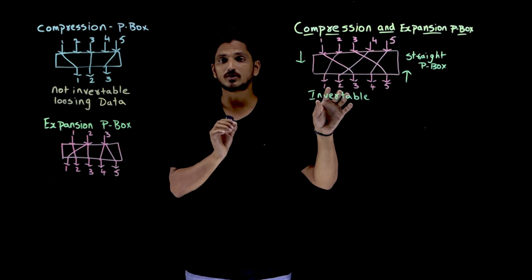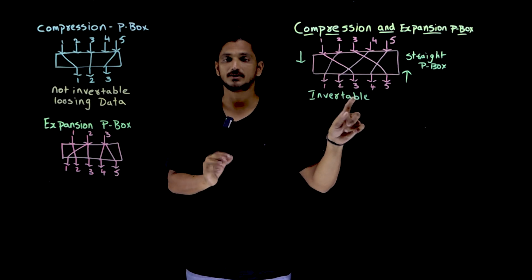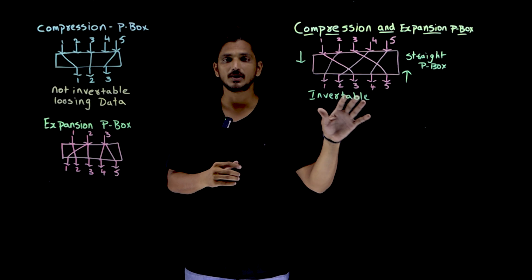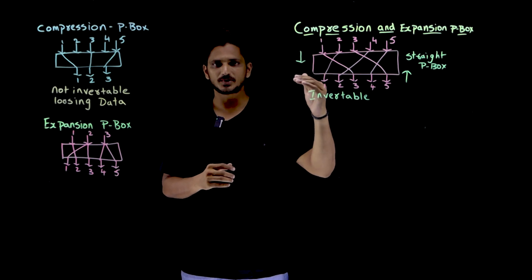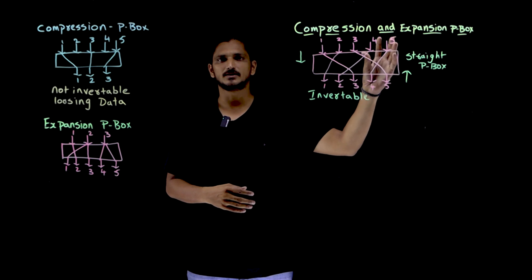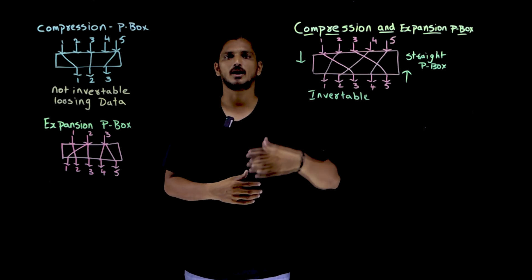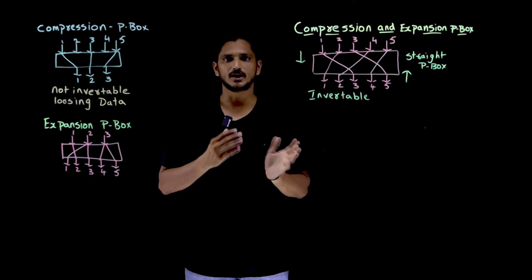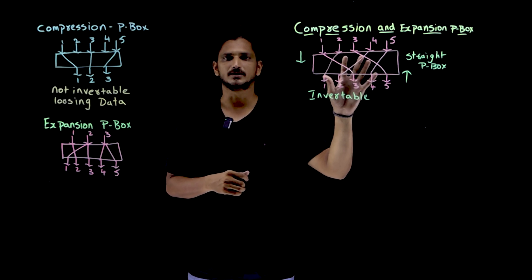That is why our Stripe P-Box is invertible. This is the point you need to understand. Invertible means if you do encryption, if you do the opposite you are going to get the decrypted message. Exact input you are going to get when you decrypt it. That is what Stripe P-Box means.